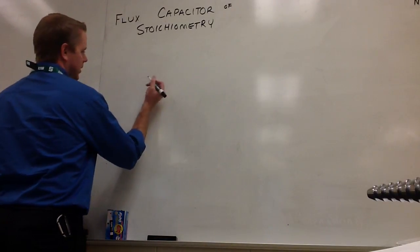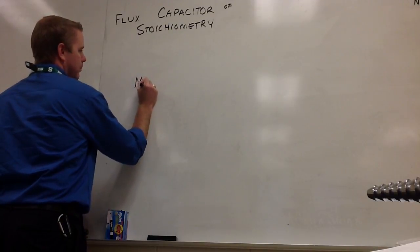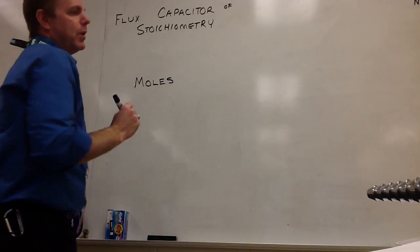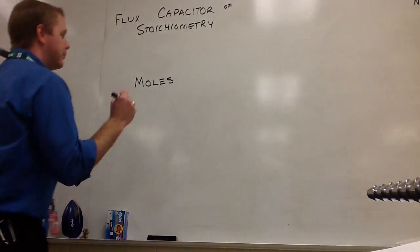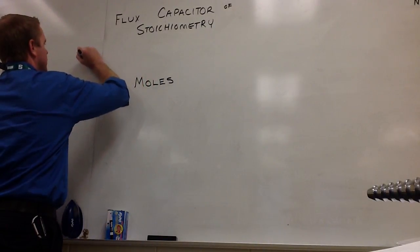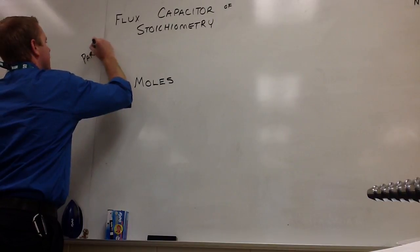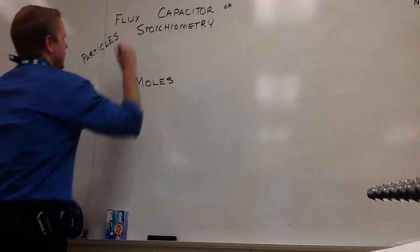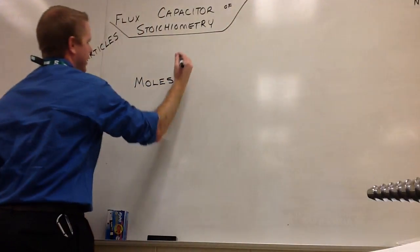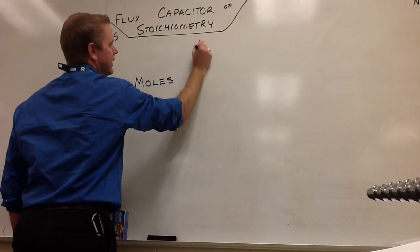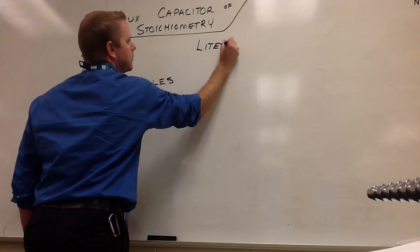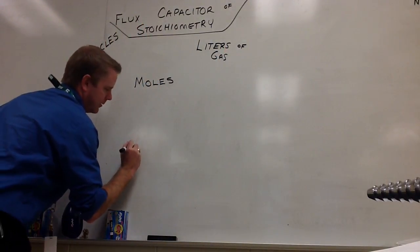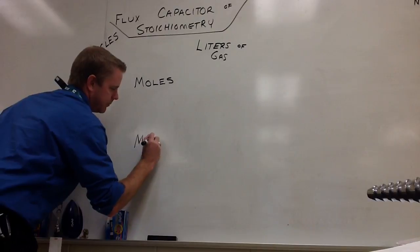So I always start with the middle. In the middle, what we're going to put is moles, referring to that term moles, 6.02 times 10 to the 23rd of a particle. On one end of it, we're going to put particles over here. It does not matter where you put these things; this is just where I put them. And then over here we're going to put liters of gas, and down here we're going to put mass.